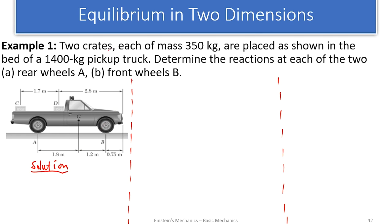Example one: two crates, each of mass 350 kg, are placed as shown in the bed of a 1400 kg pickup truck. Determine the reactions at each of the two rear wheels A, and the front wheels B. This is a car loaded with crates; we need to determine the reactions at the back and front wheels.